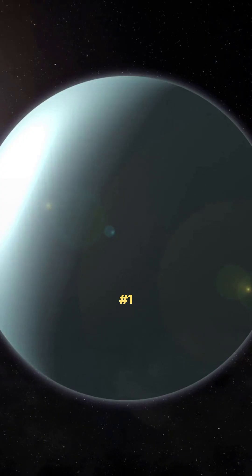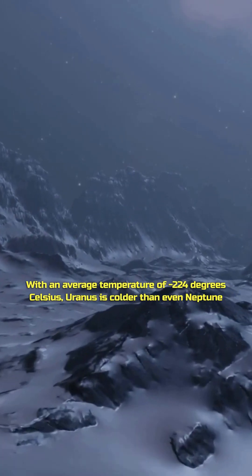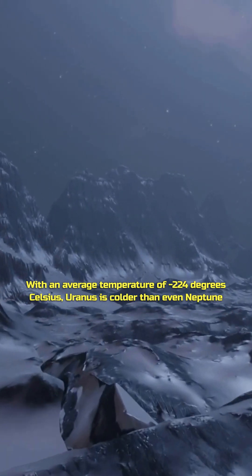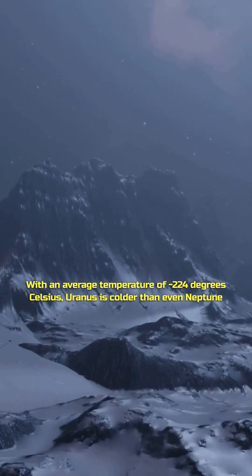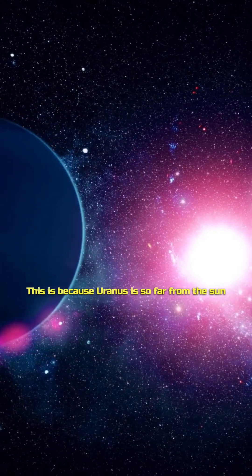Number 1. Uranus is the coldest planet in the solar system. With an average temperature of minus 224 degrees Celsius, Uranus is colder than even Neptune. This is because Uranus is so far from the Sun.